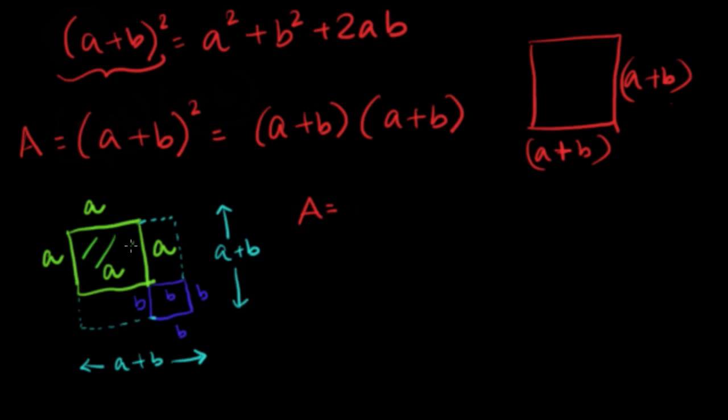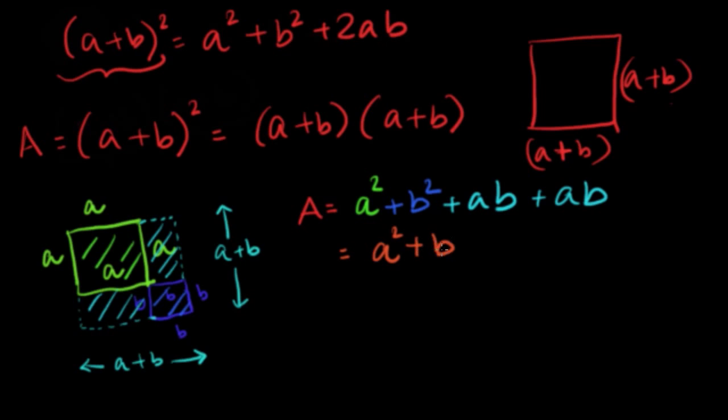It is equal to the area of this square which is a square, plus area of this square which is b square, plus area of this rectangle which is ab, plus area of this rectangle which is again ab. So when I add it up, it's a square plus b square plus 2ab.